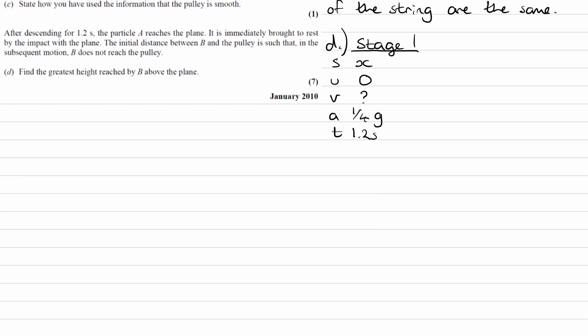V is equal to U plus AT. U is zero. A is 1/4 g. Times by T. And this will give us 2.94 meters per second.